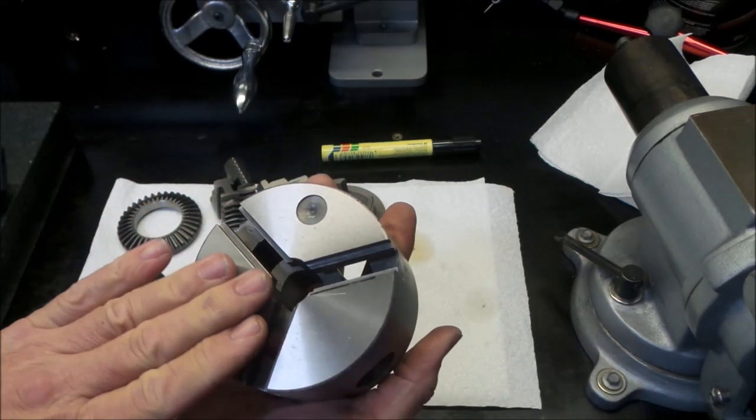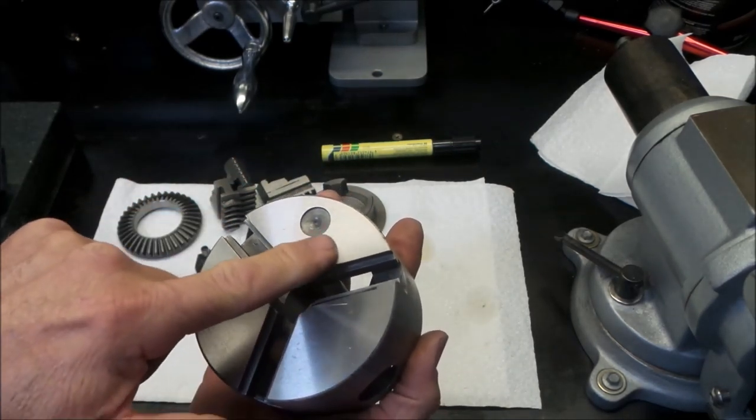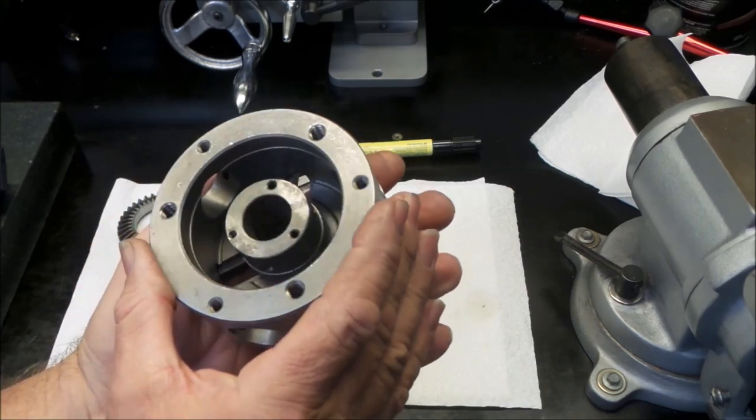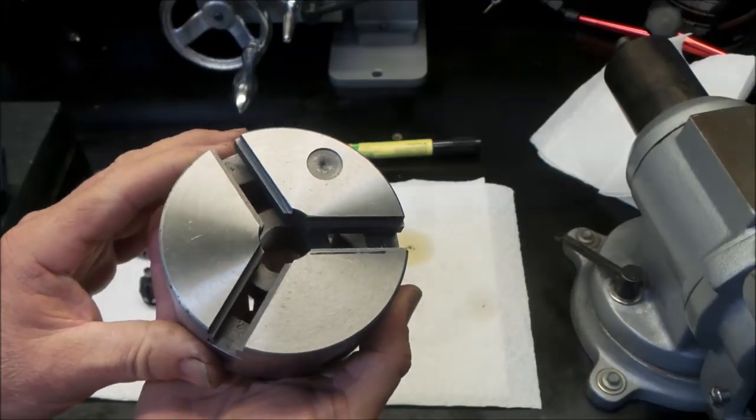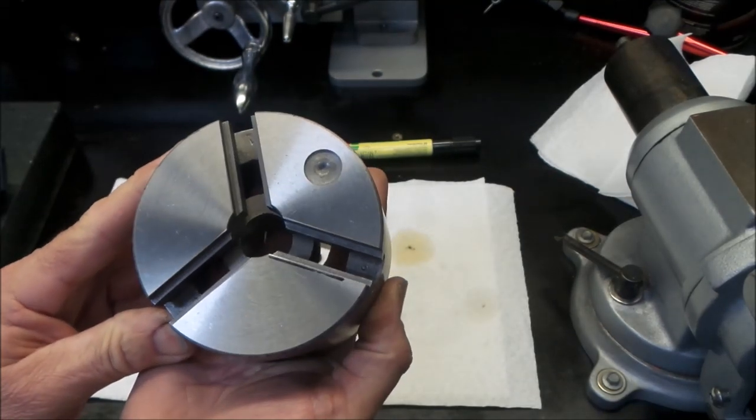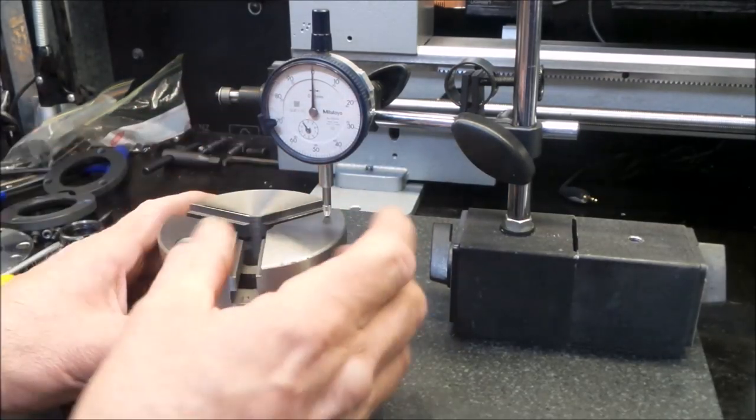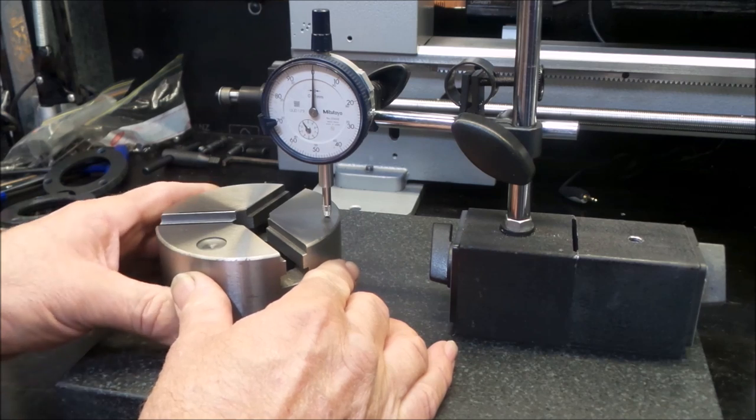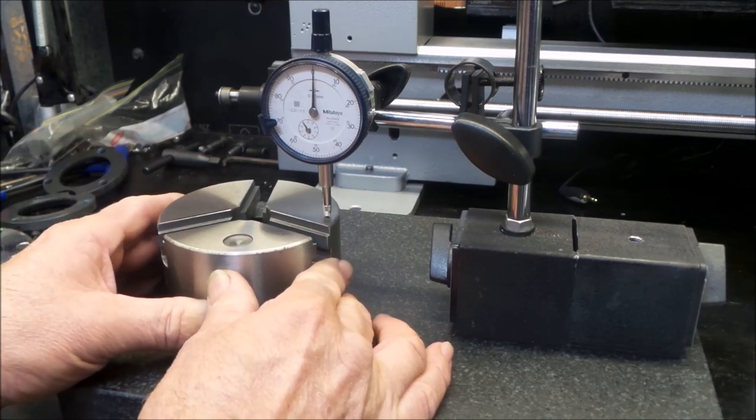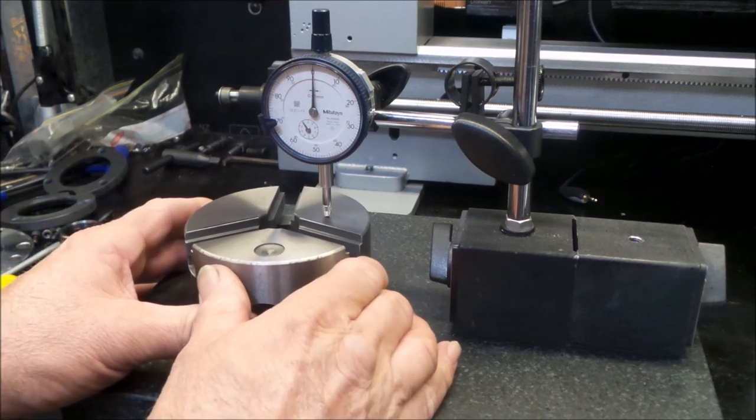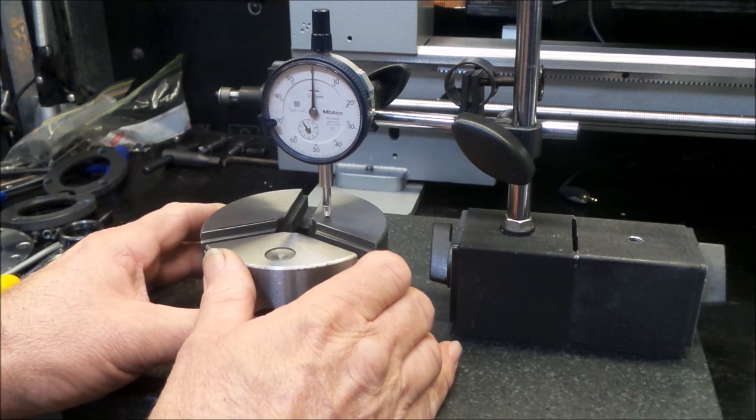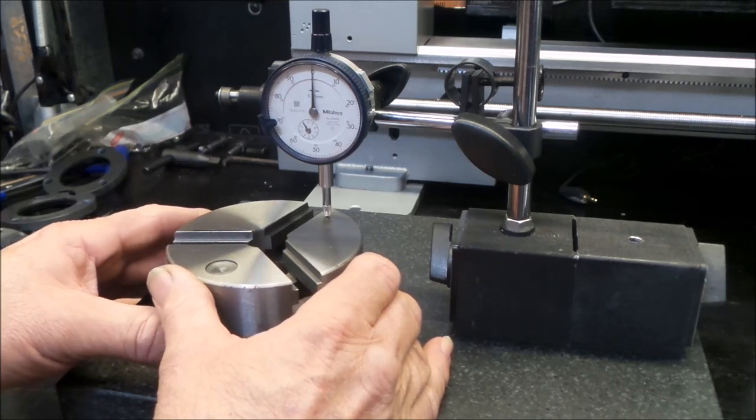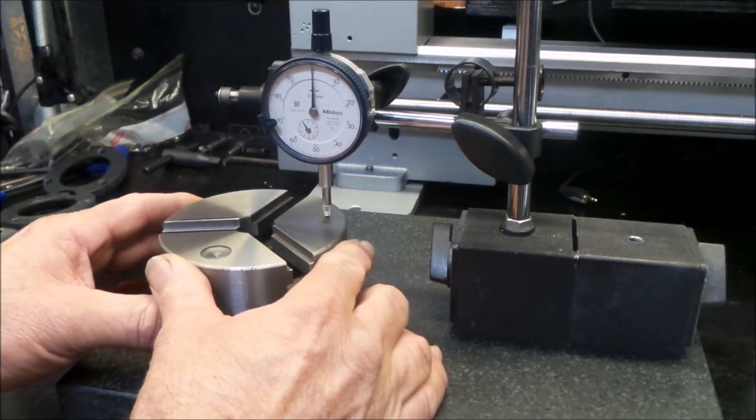Before I go any further with this, while there's no jaws in it, I might just measure this front face of the chuck and check how parallel it is to the mounting face on the back, just for curiosity's sake, we'll see what happens. So I'll grab the surface plate and we'll just go and have a bit of a look at this. Let's have a cracker today. I've just zeroed it out on this position here. I'll just run it around the top of this segment. So far that's looking pretty good.